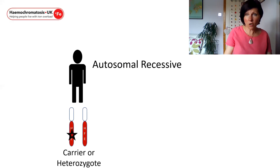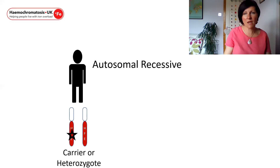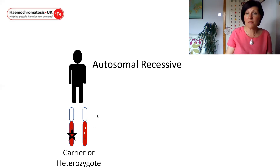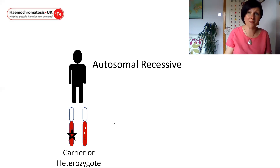We have two copies of every gene because we inherit one from our mother and one from our father. In the example given on the slide, the man shown has got two copies of the hemochromatosis gene and has inherited a single variant — indicated by the star — in just one copy of his gene. This means he has a normal copy compensating and is highly unlikely to develop symptoms; he's what we refer to as a carrier or a heterozygote.